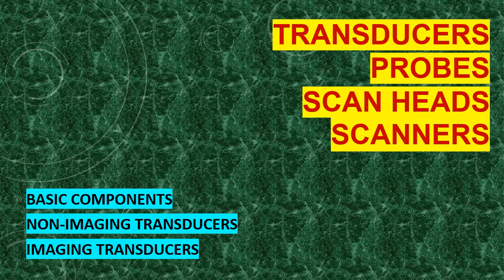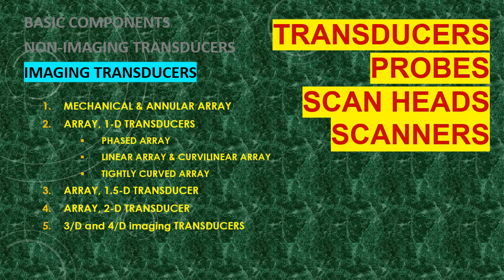Another lecture in the series on transducers — ultrasound transducers, also known as probes, scan heads, or scanners. This series discusses the basic components of the transducers, the non-imaging transducers, and imaging transducers. Here in this part, we are discussing the imaging transducers: mechanical and annular array, array 1D transducers like phased array, linear array, curvilinear, and tightly curved array, array 1.5D transducers, array 2D transducers, and lastly 3D and 4D imaging transducers.